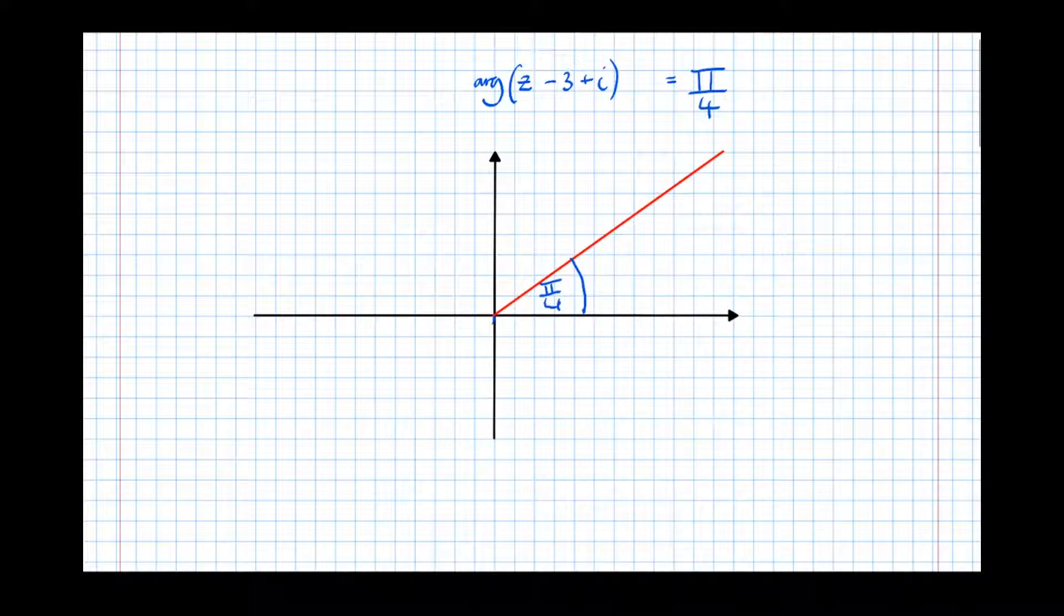And the next bit involves your transformations of functions that you did in year 1 straight maths. So we're going to perform a transformation to z. The transformation is happening inside the bracket, so it does the opposite of what you think it's going to do.